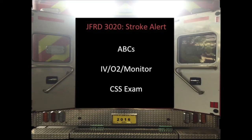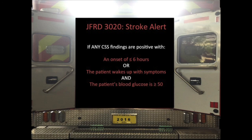Your stroke alert protocols: basic supportive care, ABCs, IV, O2, monitor, the Cincinnati Stroke Scale. If any findings are positive — facial droop, arm weakness, speech impediment — and you have onset less than or equal to six hours, or the patient wakes up with the symptoms, and the glucose is greater than or equal to 50, you're able to call a stroke alert. Symptoms less than six hours, or the patient wakes up with the symptoms. You may know they went to bed last night at nine and woke up with it — we still want that stroke alerted, but we need the information and the glucose corrected.